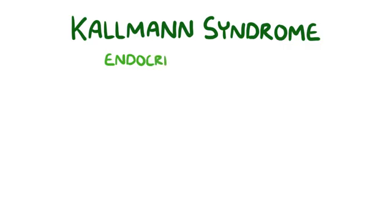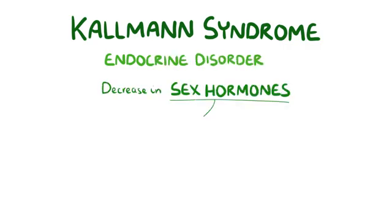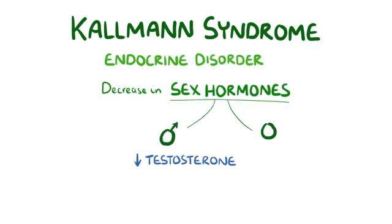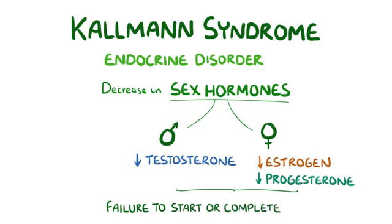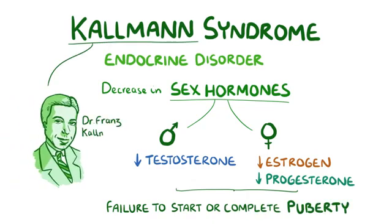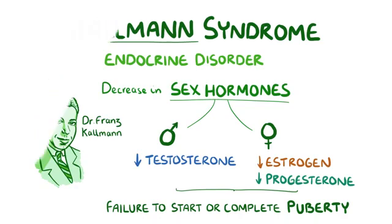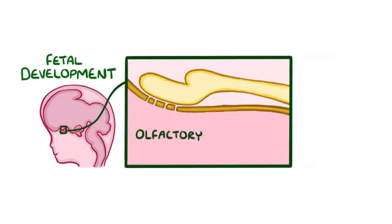Kallmann syndrome is an endocrine disorder caused by a decrease in sex hormones, either testosterone in males or estrogen and progesterone in females. That decrease leads to a failure to start or complete puberty. The syndrome is named after Dr. Franz Kallmann, the geneticist who first described it. Normally, during fetal development, there's a region of the brain called the olfactory placode.